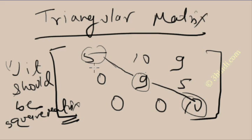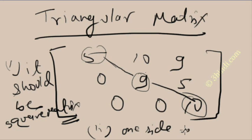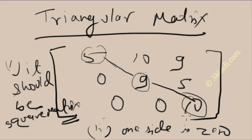This is the example of a square matrix. The other condition is that one side of the leading diagonal is 0. What do you see here? All the elements below this leading diagonal are 0 — this is 0, this is 0, this is 0. All elements below this leading diagonal are 0. So this is called an UPPER TRIANGULAR MATRIX.